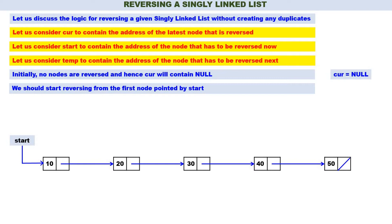What is the node that has to be reversed next? 20. Therefore temp should contain the address of 20, which is start's next. Now let us reverse node 10. Since 10 is the first node, when reversed it becomes the last node. Therefore the address part of 10 should become null — that is, start->next equals curr (which is null). Yes, 10 is reversed.